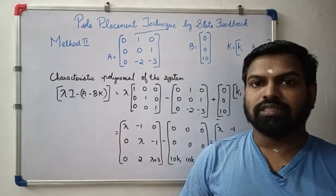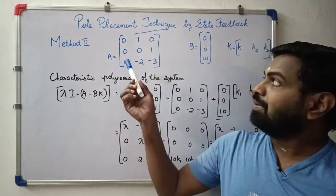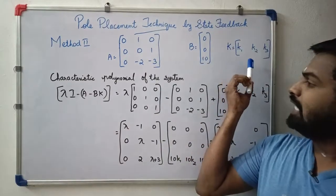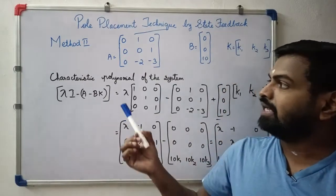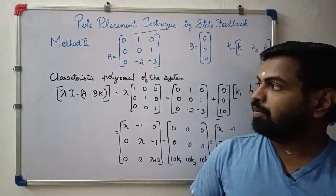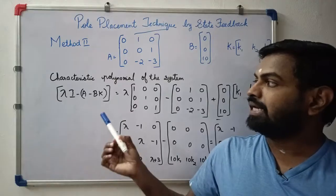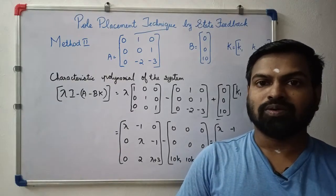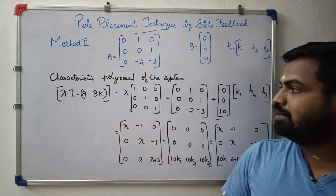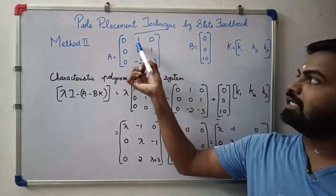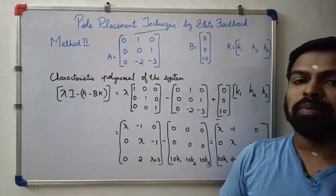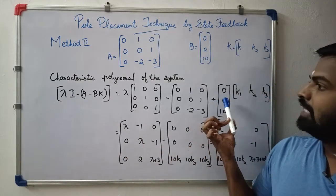For method 2, we use the A matrix and B matrix to find the K matrix with elements k1, k2, and k3. We compute the characteristic polynomial det(lambda I minus A minus BK) equals zero, setting up the polynomial equation in lambda using the identity matrix minus A minus BK.